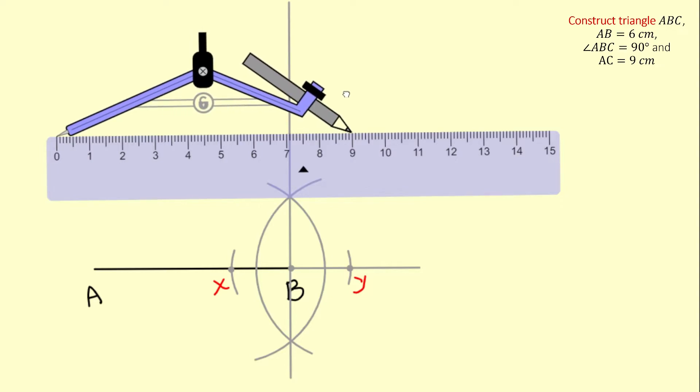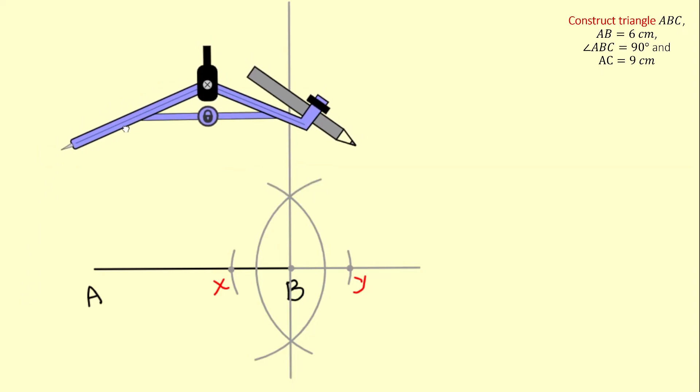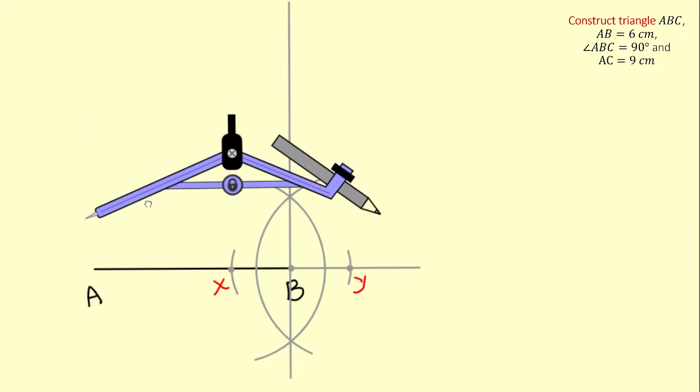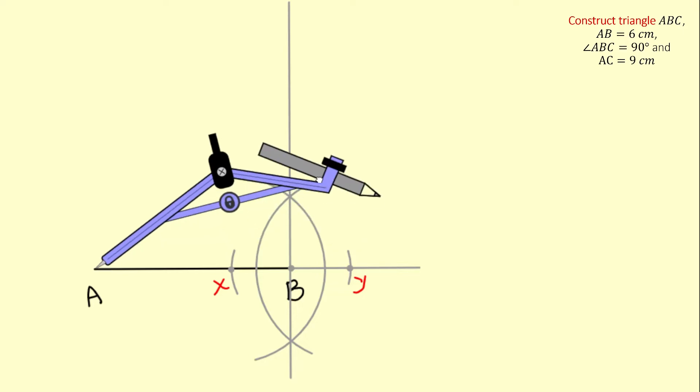And now I'm going to place the needle of my compass on point A and I'm going to draw an arc to intersect my perpendicular line.